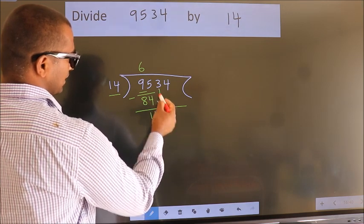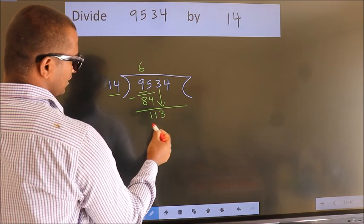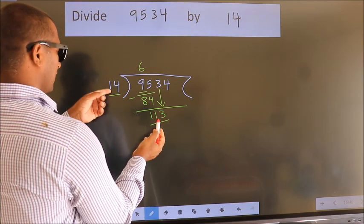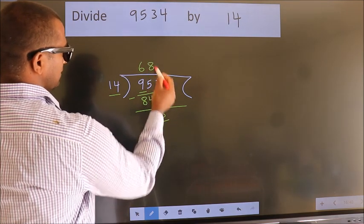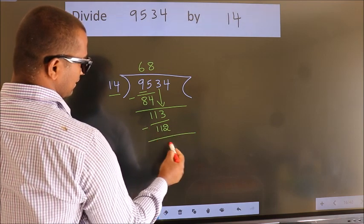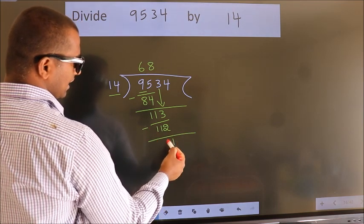bring down the beside number. So 3 down. So 113. A number close to 113 in the 14 table is 14 times 8 equals 112. Now we subtract. We get 1. After this,